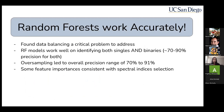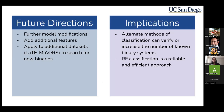Overall, what we have learned is that random forests do work accurately enough. Data balancing is a very critical problem for researchers to think about when working with data like this. It's important to modify the random forest to work for the data rather than in opposition to the classification problem. We found that it works well on identifying both singles and binaries — 70 to 90% precision approximately for both, with an overall precision of 70 to 91%. Some feature importances are consistent with the spectral indices selection. Future directions include further model modifications, adding additional features such as SNR, and applying this to data sets such as late movers to begin our search for new binaries.